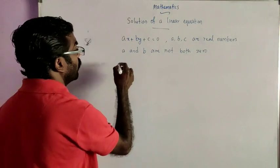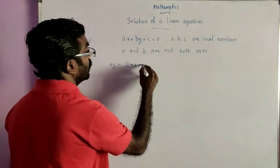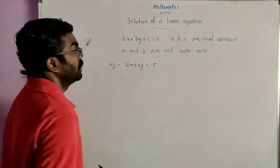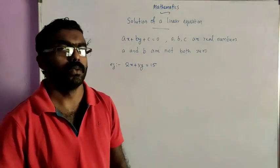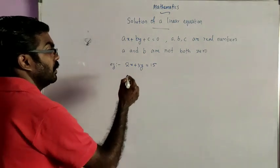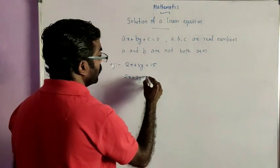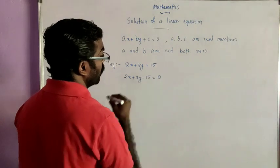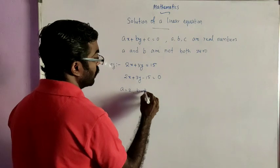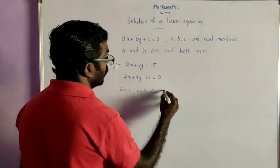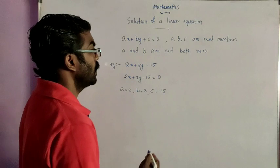Here the variables are x and y. For example, 2x plus 3y is equal to 15. This is an example of a linear equation in two variables. We can arrange it in standard form: 2x plus 3y minus 15 is equal to 0. Here the value of a is 2, b is equal to 3, and c is equal to minus 15.